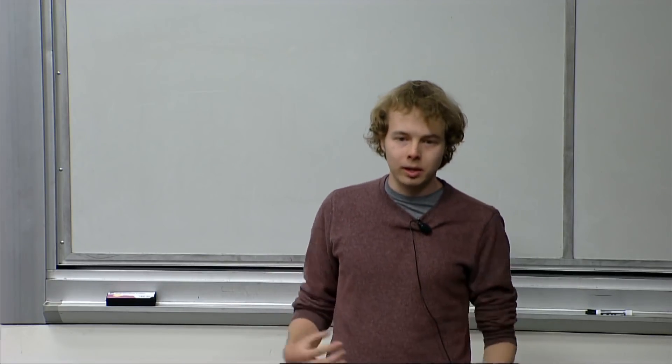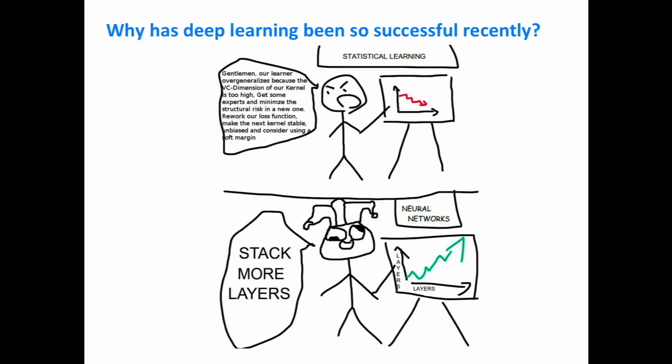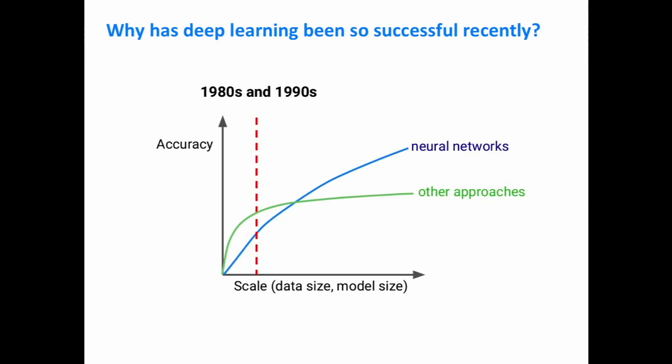Why has deep learning been so successful recently? There's a comic where a statistical learning person has a really complicated, well-motivated method, and the neural net person just says 'stack more layers.' Deep learning has not been successful because it's more theoretically motivated or sophisticated. In fact, older statistical methods often have more theoretical underpinning. The thing that makes deep learning successful is its ability to scale — as we increase data size and model size, we get really big boosts in accuracy.